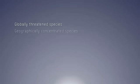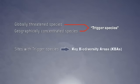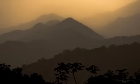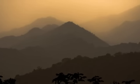Globally threatened species and geographically concentrated species are referred to as trigger species. Places containing trigger species are called key biodiversity areas, or KBAs. These sites of global conservation significance represent targets at the site level. Key biodiversity areas are places known to contain trigger species.